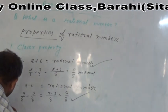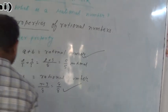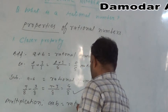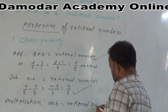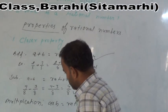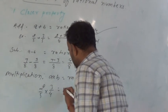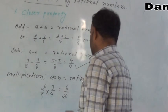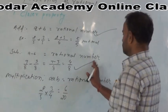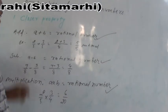Now multiplication. A × B equal to rational number. So we are taking 2/5 × 3/4. We multiply, 2 × 3 is 6, 5 × 4 is 20, 6/20. So we see that 6/20 is also a rational number, so multiplication is also applicable for closure property.